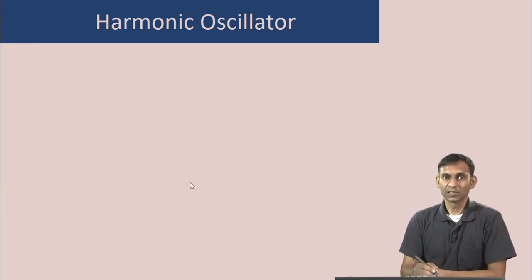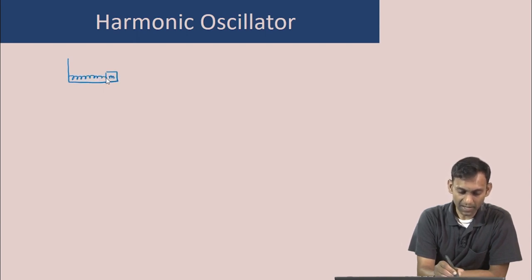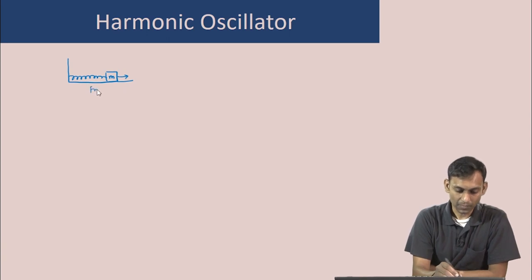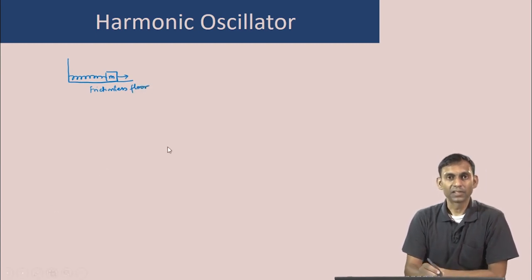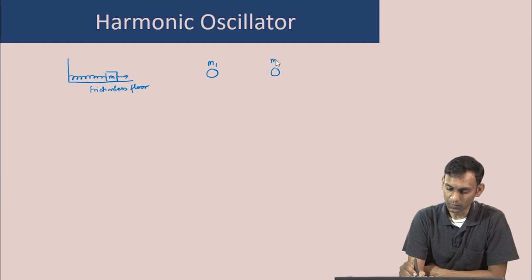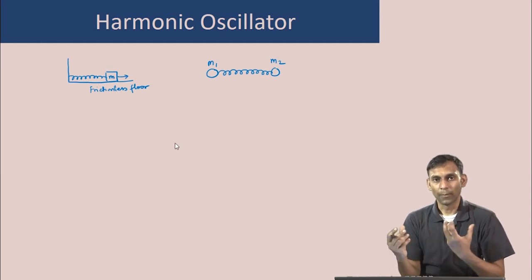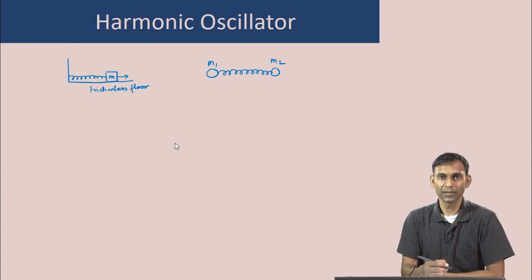The picture of a single mass moving in a harmonic potential, which we have discussed before, shows a mass m connected by a spring to a rigid wall moving on a frictionless floor. A diatomic molecule looks different: you have two masses m1 and m2 connected by a spring, and these two particles move according to the force due to the spring with no other forces acting on them.